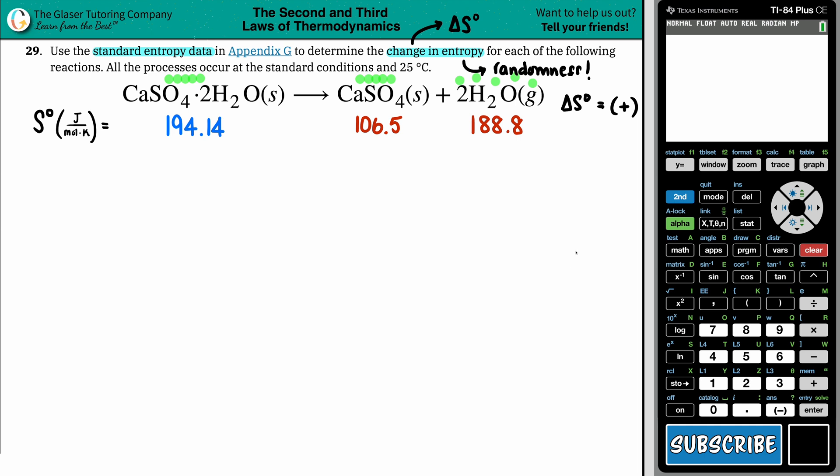Well, what I did for you guys is I went into the back of the textbook to find what those entropy values are. So for calcium sulfate dihydrate, the entropy value is 194.14 joules per mole times Kelvin, calcium sulfate 106.5 joules per mole Kelvin. And H2O gas is 188.8. Make sure that you don't get fooled by liquid and gas for H2O. This specifically wanted gas, so it's a different entropy value than a liquid.